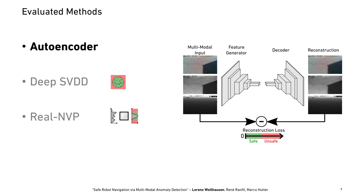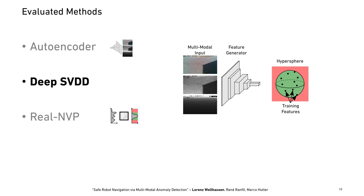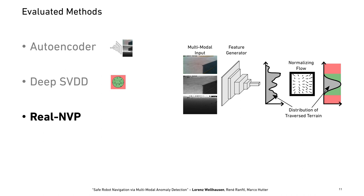The next method is a deep support vector data descriptor (SVDD), where you try to map all features at train time into a hypersphere of minimal radius. At test time, terrain features that fall outside this hypersphere are considered anomalous, while those inside are considered normal. Finally, Real NVP is based on normalizing flow, which allows exact likelihood inference of the posterior distribution. At test time, samples with low likelihood of being generated by the terrain distribution are considered unsafe and anomalous, while high-likelihood samples are considered normal and safe.